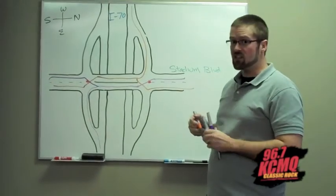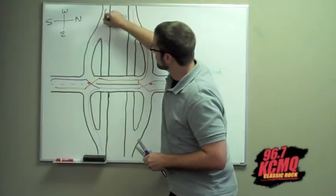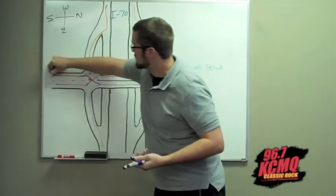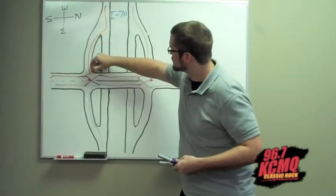Coming from 70, you're going to come this way, take the exit, come on through here and if you want to go south on Stadium, just make your turn and make your way to go to the mall, whatever you want to do.